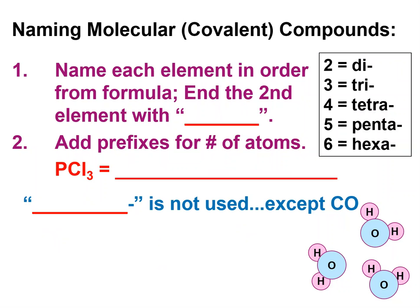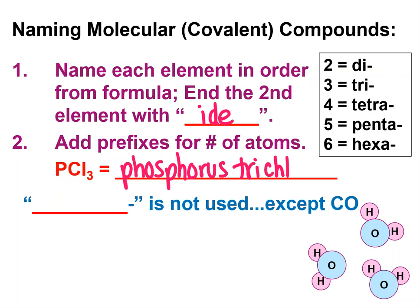So when we name them, the name specifies how many by using these prefixes. The second element we will end with "-ide." For example: phosphorus trichloride. Notice we don't say "mono" at the front for one phosphorus, but we do say "tri" for the three.